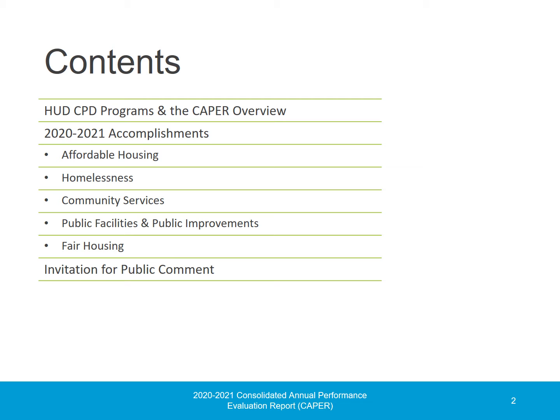First, we'll briefly discuss the U.S. Department of Housing and Community Development Community Planning and Development programs and the role of the CAPER. Then, we'll review the accomplishments reported in the CAPER by priority area, including affordable housing, homelessness, community services, and public facilities and public improvements. The CAPER also reports on fair housing activities. Finally, we'll provide information about how the public can comment on the CAPER.